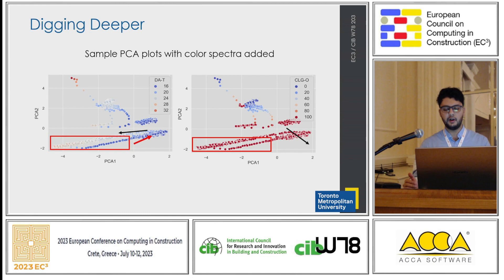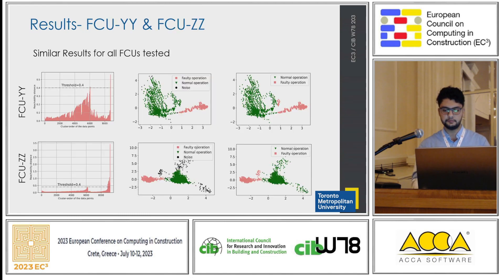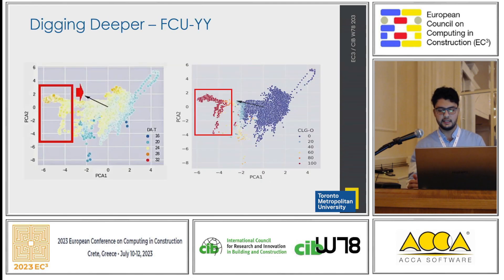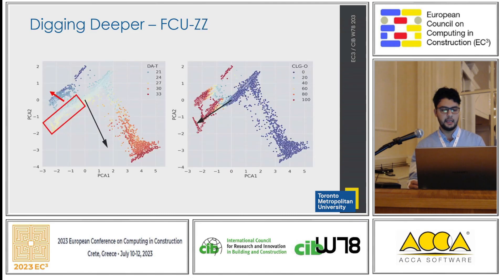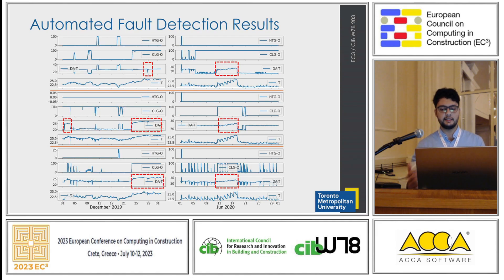To investigate the fault, we used color-coded PCA plots and added vectors to indicate the direction of change for each variable. Red arrows show the actual change, and the black one shows the expected change. The same process was repeated for the other FCUs — FCU-YY and FCU-ZZ. To better understand these faults, a PCA plot was consulted for FCU-YY and FCU-ZZ as well. These are extracts from time-series data analyzed during the peak heating season on the left and cooling season on the right, for FCU-XX on the top, FCU-YY in the middle, and FCU-ZZ at the bottom. The dashed box indicates the detected faults confirmed by the certified energy manager.